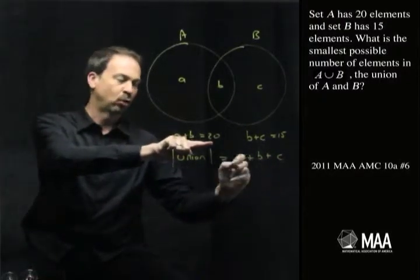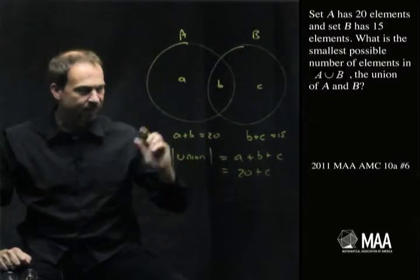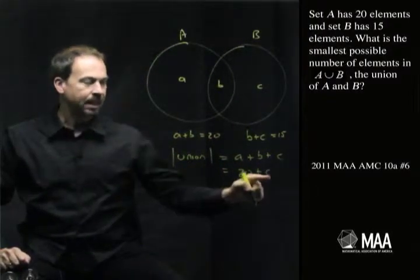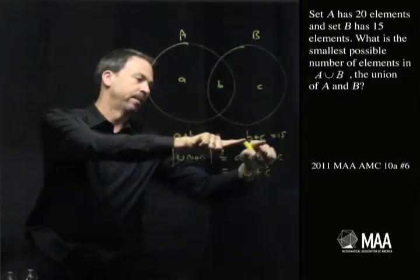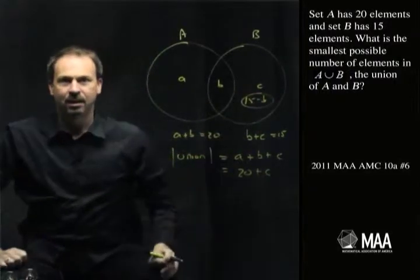Well, I'm also just writing a plus b being 20. I might as well call this 20 plus c. Remember, I'm trying to find the smallest. c. Do I know anything about c? Well, I do. Here's a little formula for c. I guess it's 15 minus b.